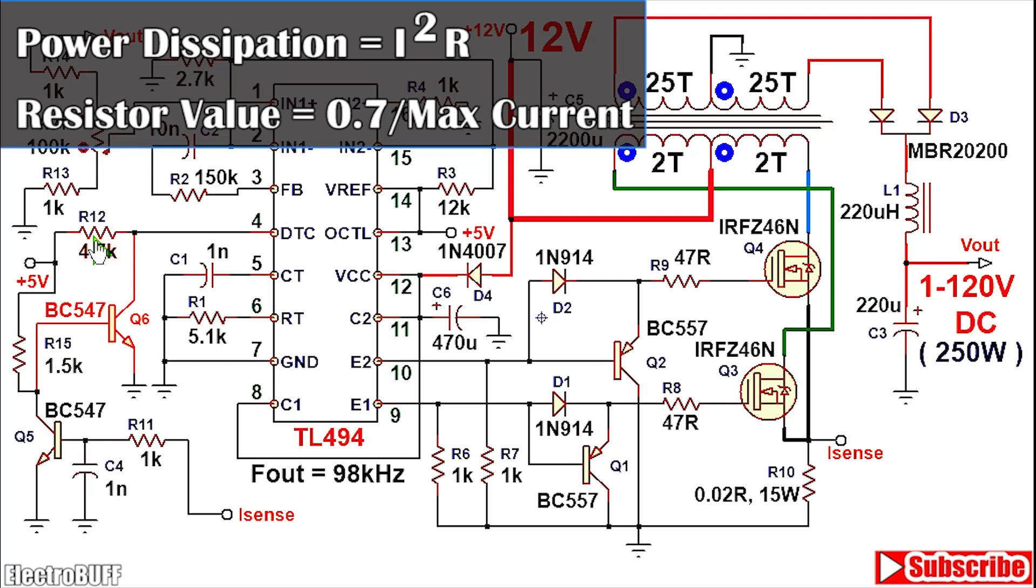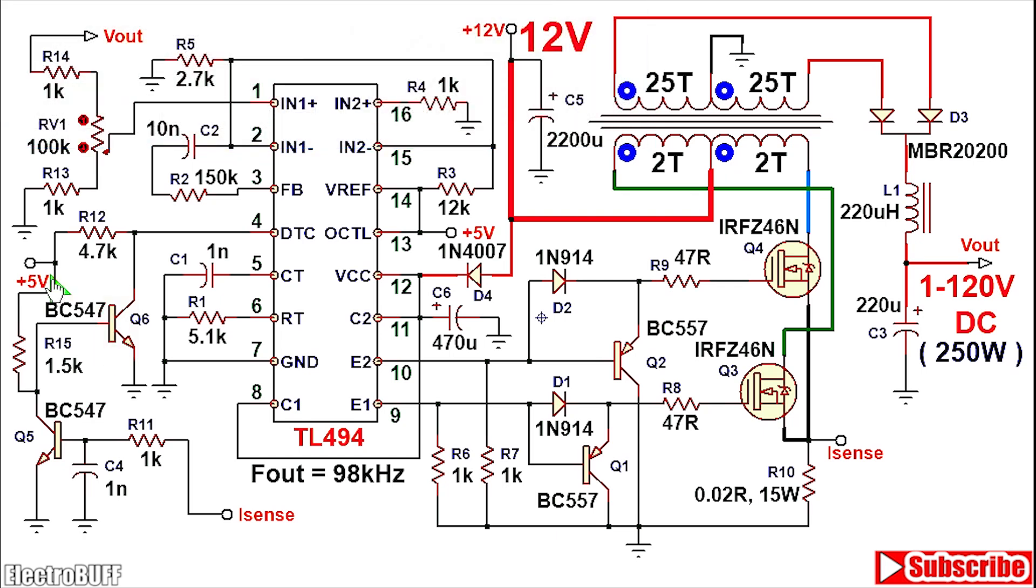you have the base of the second transistor Q6 pulled down to ground ensuring that it turns off. And so you have 5 volts flowing through the resistor R12 and through the dead time control pin 4. When this pin is pulled up to a voltage above 3.3 volts, the output duty cycle or pulse width is completely disabled. This will ensure that the transistors do not switch and so the current on the primary side of the transformer is cut off. This will act as a short circuit protection in case there is a short circuit on the secondary side or prevent overcurrent in case you have a heavy load on the secondary side. And the 5 volts here is from the 5 volt reference pin 14 of the IC as shown.